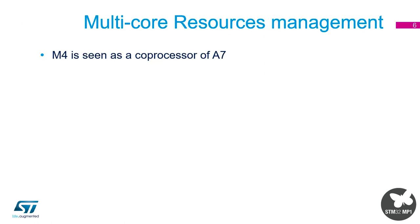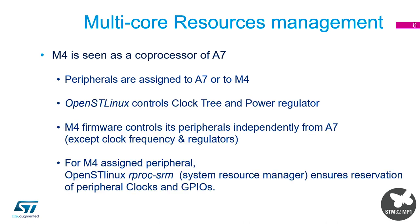For resource management, the M4 is seen as a co-processor to the A7. We assign peripherals to either the A7 or the M4 based on what you need. Linux controls the clock tree and power side, so the M4 cannot change the main core frequency of the device. The M4 can control the frequency of peripherals it's using — for example, if a timer has a pre-scaler, that can be controlled by the M4 — but the main sysclock is controlled by Linux.